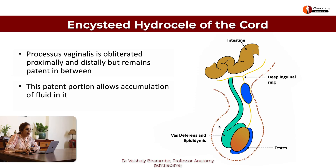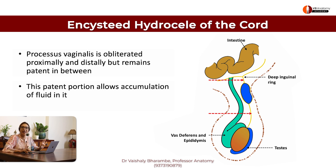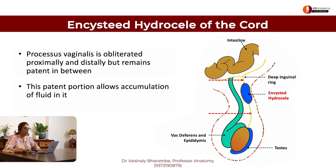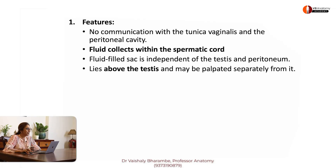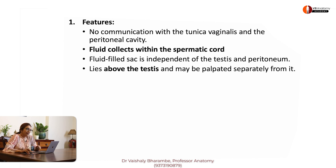Now encysted hydrocele. You can see here that above and below the processus vaginalis got fused, but in between it remained unfused, resulting in development of a fluid-filled sac called encysted hydrocele. Features: no communication with the peritoneal cavity; fluid collects within the spermatic cord; the fluid-filled sac is independent of the testes — you can tell that this is the testes and this is the sac.